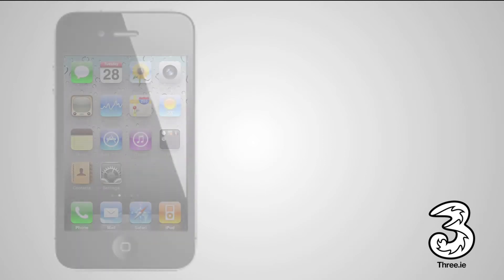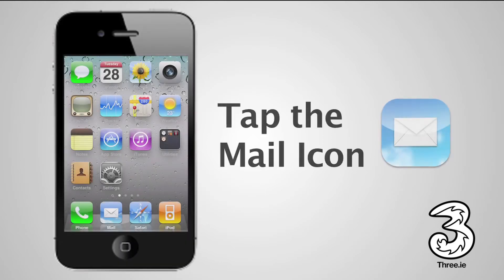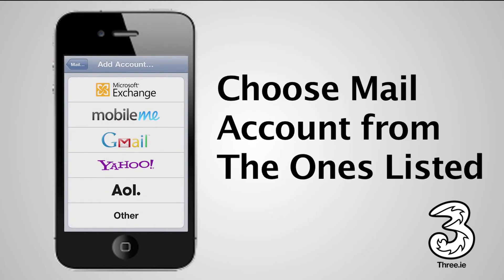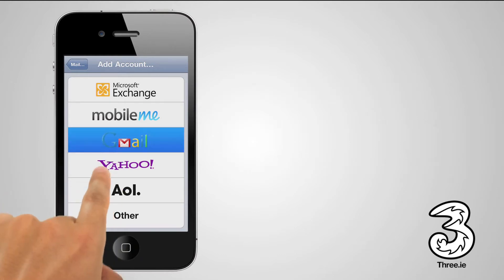To set up your email on your iPhone, on the home screen tap the Mail icon. Then choose your email account from the ones listed. If you can't see it, tap Other. We will set up a Gmail account.